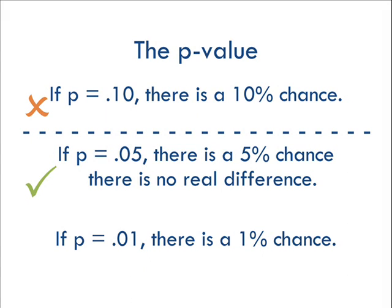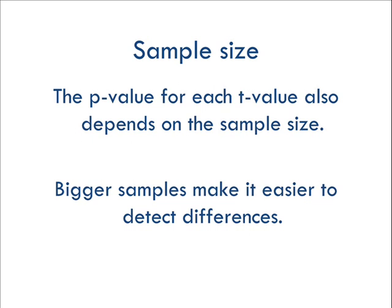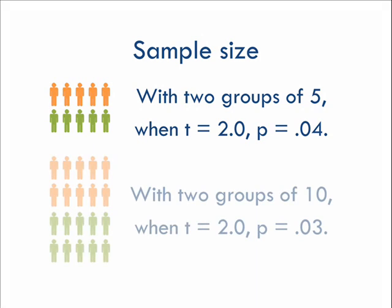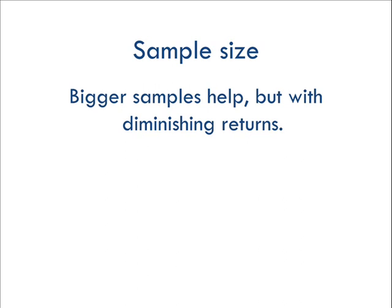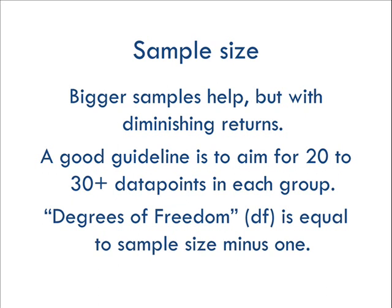The exact p-value associated with a t-value depends on how many people are in your sample. Bigger samples make it easier to find statistically significant differences. For example, with two groups of 5, a t-value of 2 has a p-value of 0.04. When you increase the sample size to two groups of 10, that same t-value of 2 now has a p-value of 0.03. Bigger samples are helpful, but the benefit diminishes as sample size increases. A good guideline is to have at least 20 to 30 data points in each group. If your sample is too small, you may not have the statistical power to detect differences that really are there. Sample size is represented through the degrees of freedom; for t-tests, the df is the sample size minus 1.